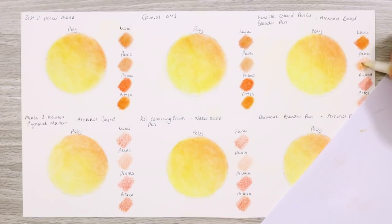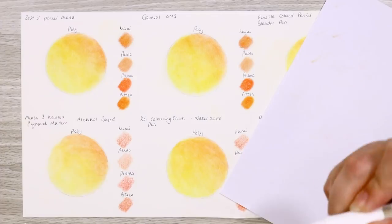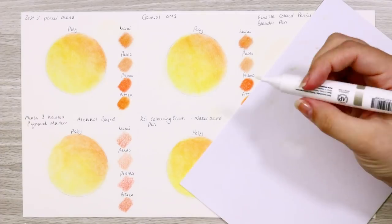What about the Finesse blender pen? Adding more pencil layers again, extremely easy, no issues whatsoever. I was able to achieve a really smooth look on the large circle and the smallest swatches layered up to almost no grain of the paper showing through.